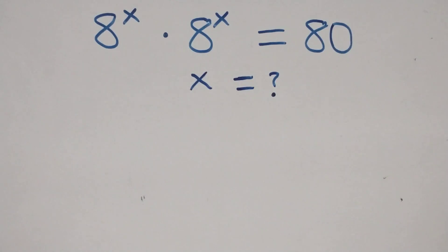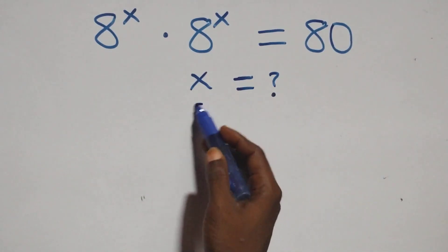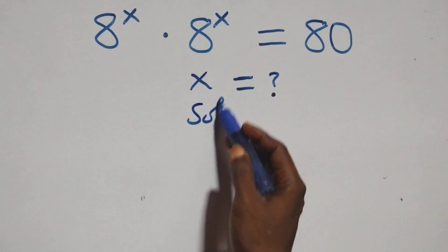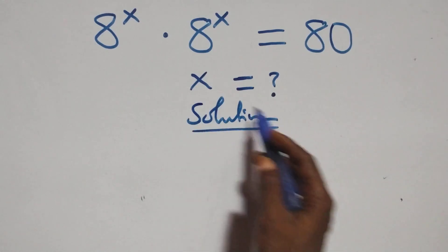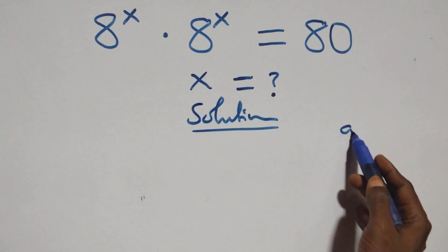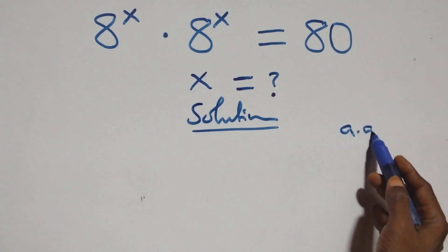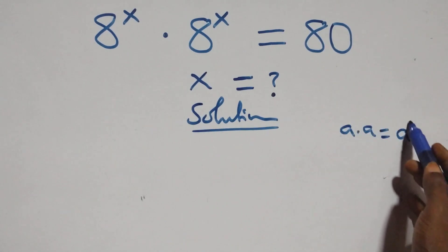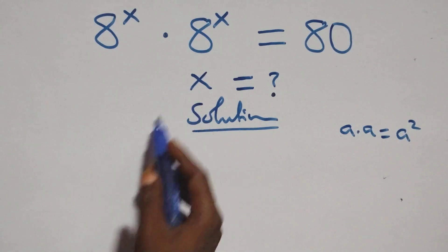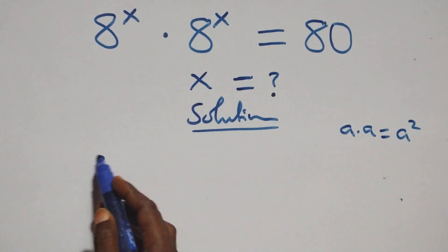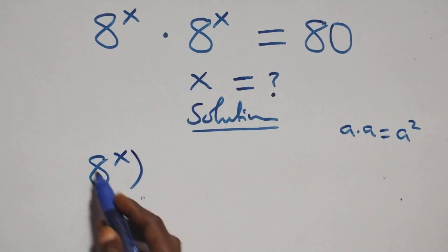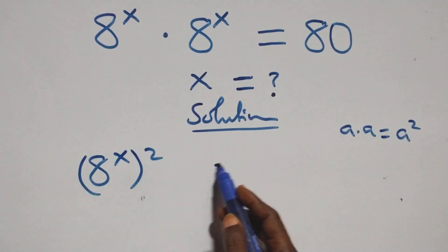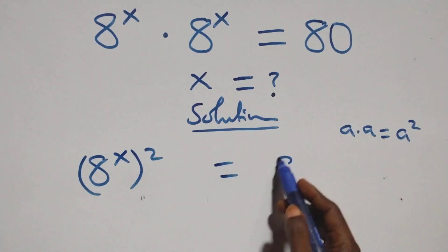Hello, you're welcome. How to solve this nice exponential equation. What we have here: when we have a times a, which can be written as a squared, this same thing — multiplying — we can write it as a to the power x, all squared, equals the right-hand side.